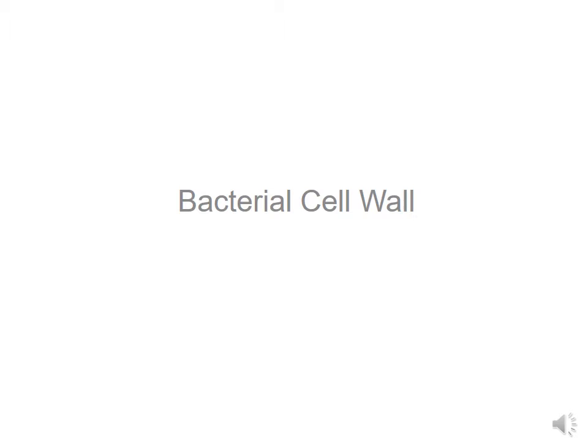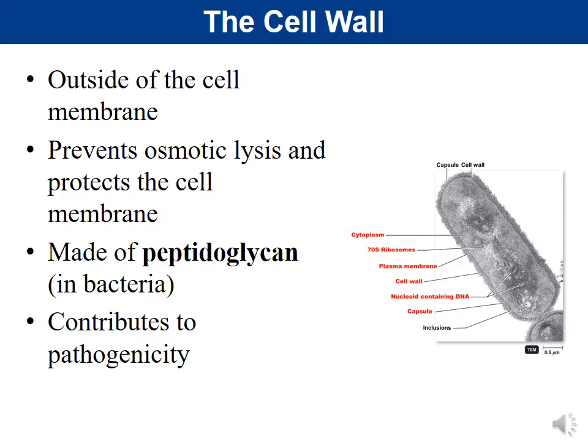We're going to start by talking about the bacterial cell wall. The cell wall is just outside the cell membrane, and its function is to prevent osmotic lysis — meaning to prevent the bacteria from lysing or breaking open if water goes in. The other function of the cell wall is to help protect the cell membrane.